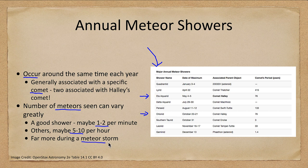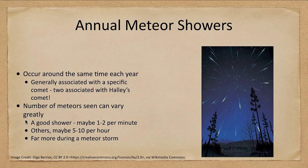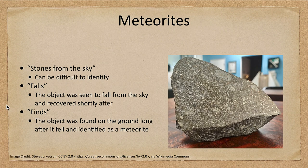Others you might only see a handful per hour. In a meteor storm, where we pass through increased debris, we may get even more than one to two per minute — but you do have to be patient watching for them. You can also see sporadic meteors that are not necessarily associated with a particular shower, coming from a different direction than the shower meteors.